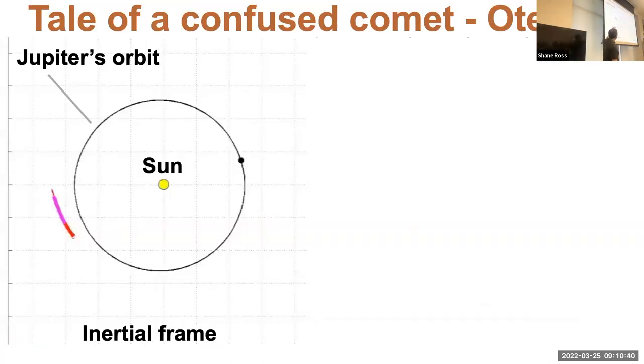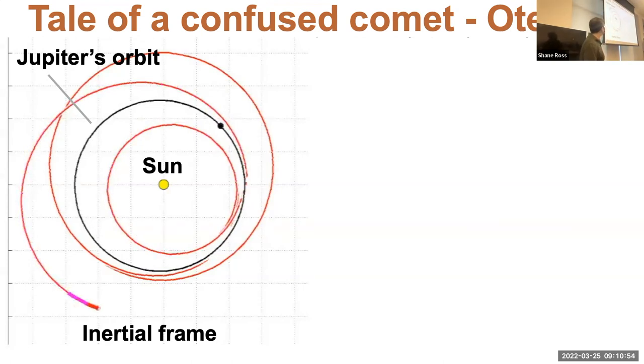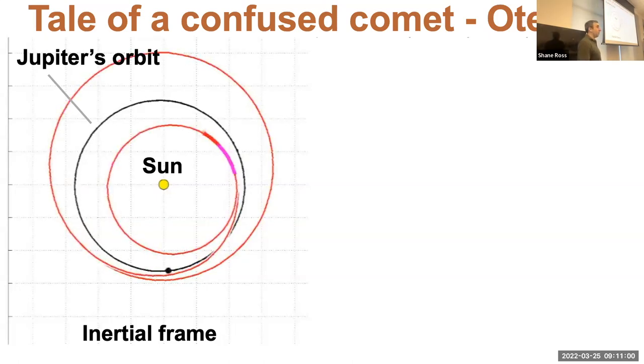I'm showing an inertial frame projection with the sun, Jupiter's orbit, and comet Oterma during the decades from 1910 to 1980. You see it had a close encounter with Jupiter, went inside Jupiter's orbit, and then left. It did this really interesting free transfer from outside a planet's orbit, inside, and back out via a close encounter.